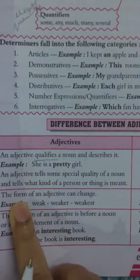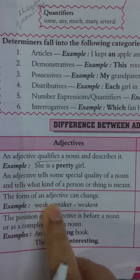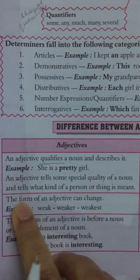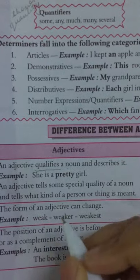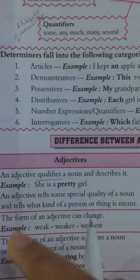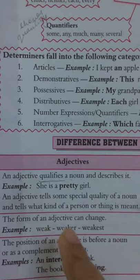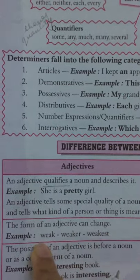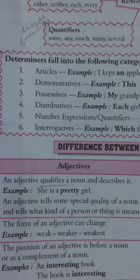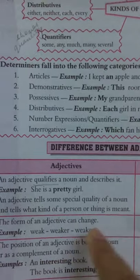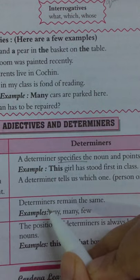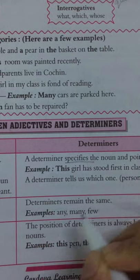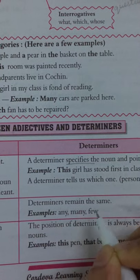The second difference: the form of an adjective can change — meaning the degrees of an adjective can change from positive to comparative to superlative. For example: weak, weaker, weakest; tall, taller, tallest. But with determiners, the words cannot change — they remain the same: any, many, few.